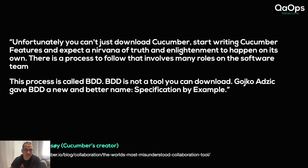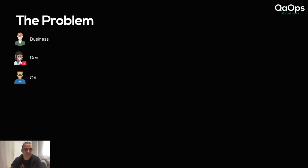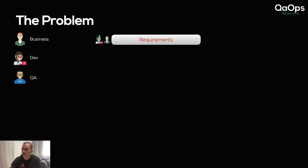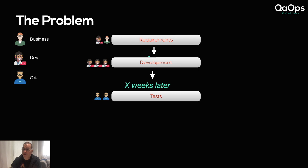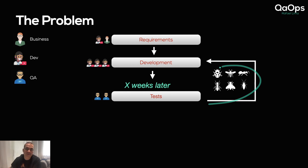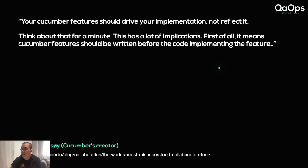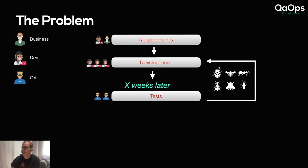I'm going to go through the whole process of writing and automating these from the start. So what is the problem, in my vision, related to how many teams operate? The problem is we have a business person, a dev person, and a QA person. The dev and the business figure out the requirements, the developer develops, and after a certain amount of time the QAs do the testing and file issues to the developer.